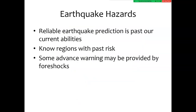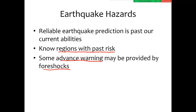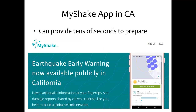Reliable earthquake prediction is past our current abilities — we can't predict exactly when an earthquake is going to happen. But we have a really good idea of regions that have risk because there have been earthquakes there in the past. We might be able to get some advanced warning in the future, especially from foreshocks. There's an interesting app in California linked up to networks of seismometers that can send out an alert to anybody to prepare themselves. But it only gives you tens of seconds, because if you're in California, you won't have that long between when the shaking starts near the epicenter and when shaking starts near you.